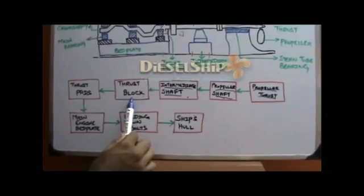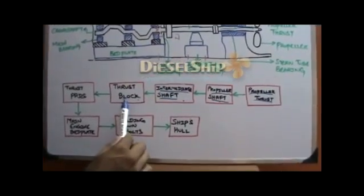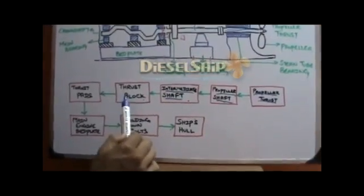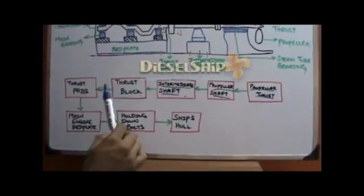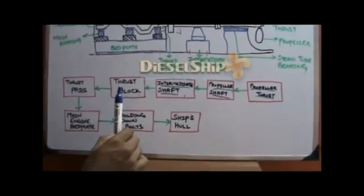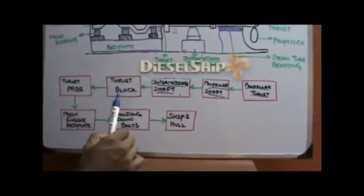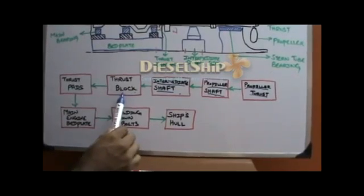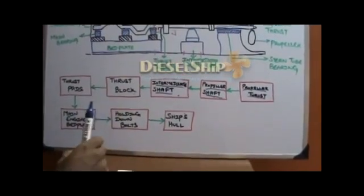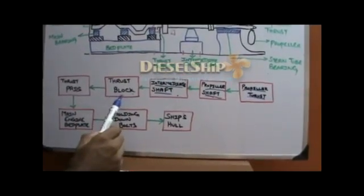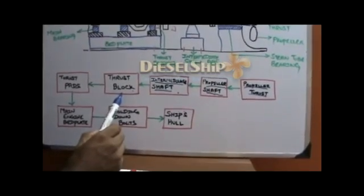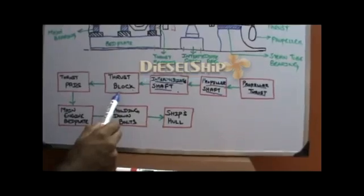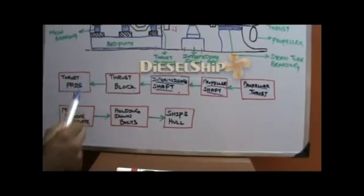The main reason the thrust block is placed at the aft-most part of the engine is to protect the crankshaft from propeller thrust. The crankshaft must never be subjected to the propeller thrust. Thus, the thrust block is placed at the aft-most part of the main engine so that no part of the crankshaft is subjected to the propeller thrust. This thrust block has thrust pads.